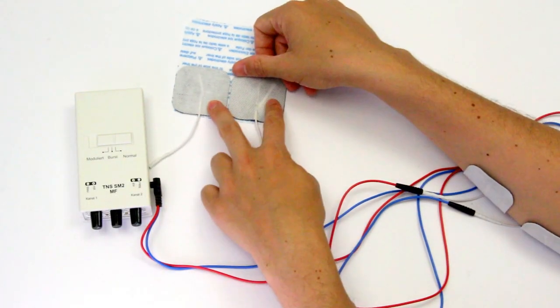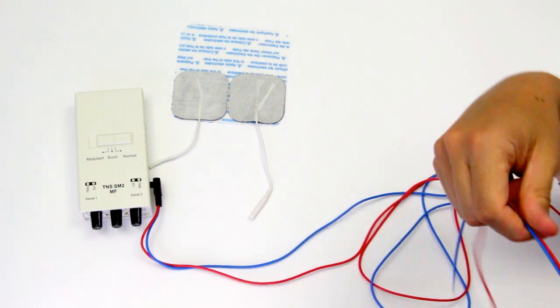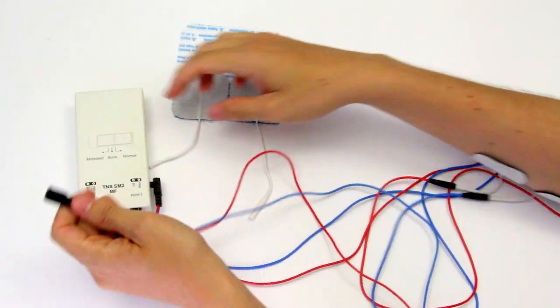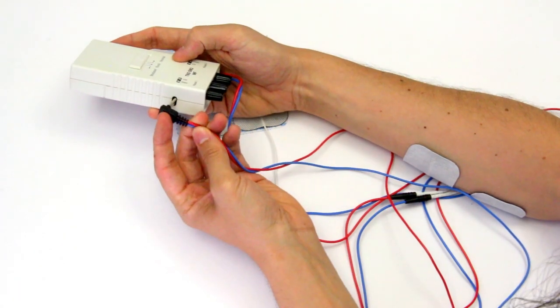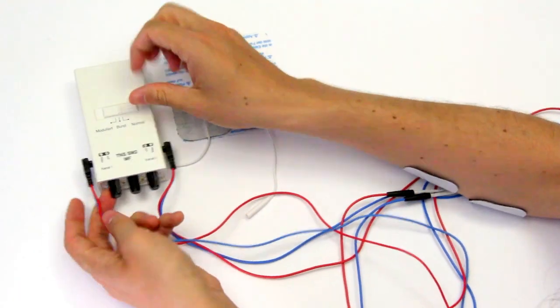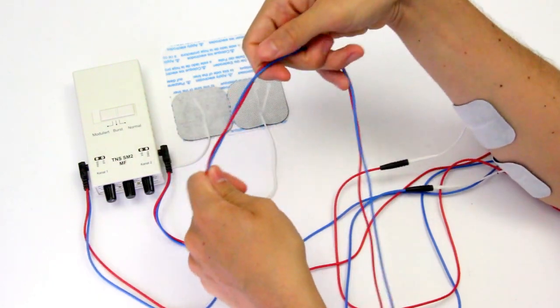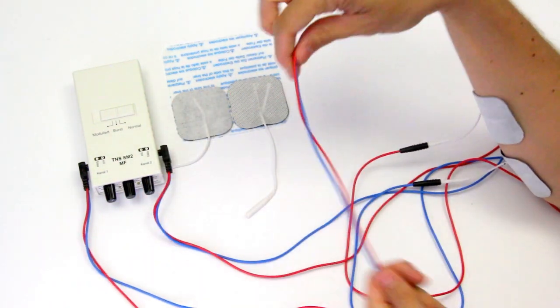Now we can wire another channel. That means another muscle. We grab a cable and plug it into channel 2 of this machine. We're going to plug this cable to two electrodes because once again we need two electrodes to make one EMS channel.